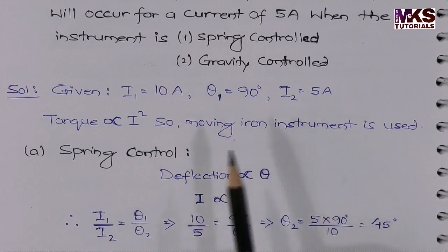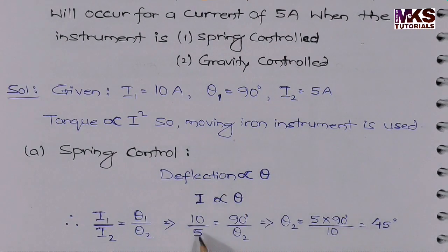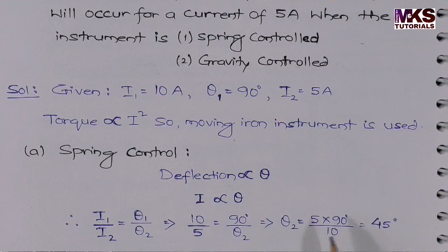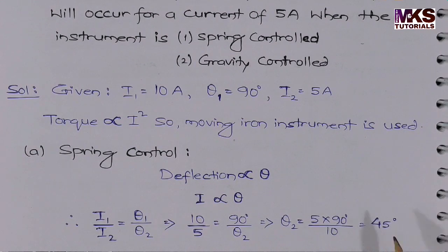Here I₁ and I₂ values are given. Substituting: 10²/5² = 90/θ₂. That is 100/25 = 90/θ₂. Solving, θ₂ = 45 degrees. So for spring control, when current is halved, deflection becomes 45 degrees.